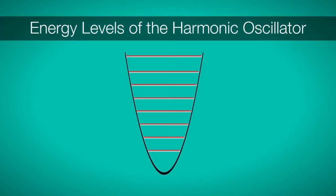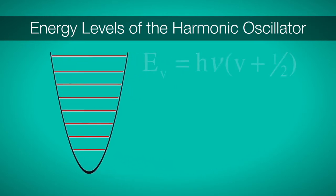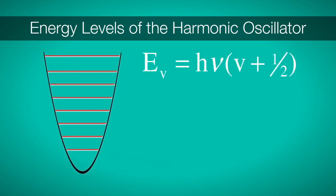Vibrational energy levels are predicted by a simple model, the harmonic oscillator. If we solve the Schrödinger equation for the harmonic oscillator potential, we find the allowed energy levels. The energy levels of the harmonic oscillator, shown here in red, are given by the simple expression E_v equals h nu times the quantity v plus one-half.